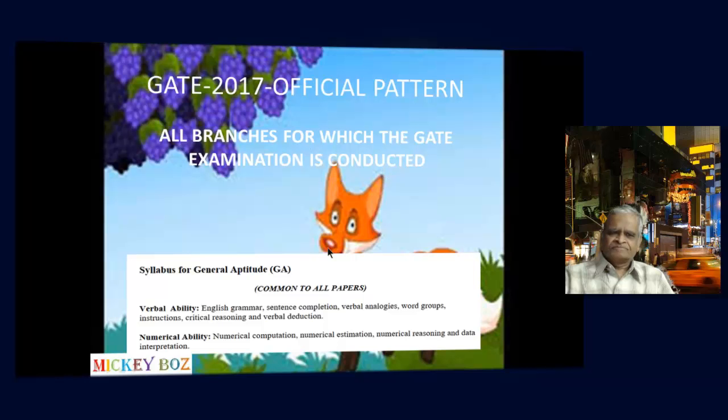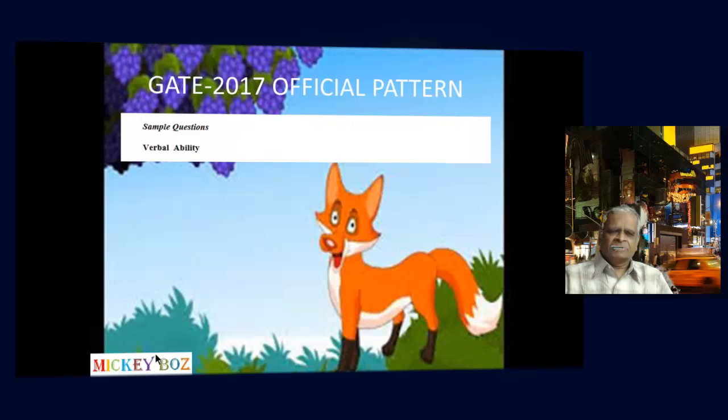There are two types of general aptitude questions: verbal ability and numerical ability. In verbal ability, English grammar, sentence completion, verbal analogies, word groups, instructions, critical reasoning, and verbal deduction are tested. In numerical ability, numerical computation, numerical estimation, numerical reasoning, and data interpretation are involved.